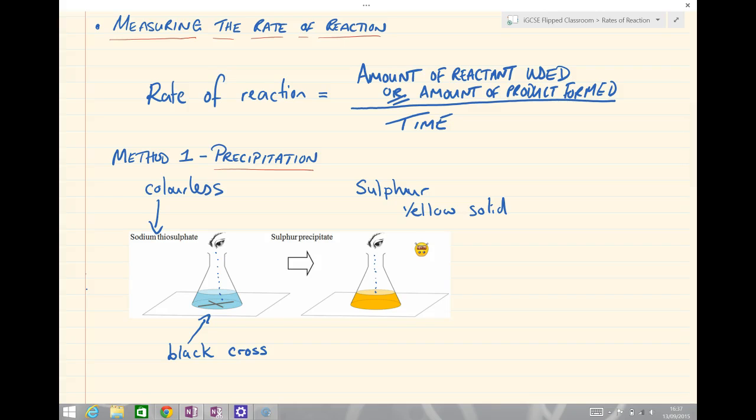So there we go, Method 1: precipitation where we form a solid. We are measuring in the experiment the amount of product formed in a given time.